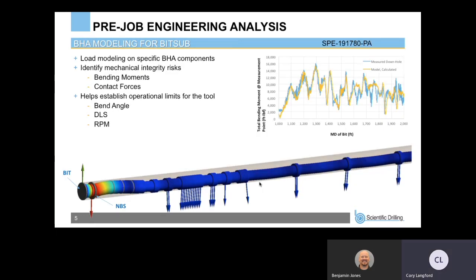One of the key pre-job modeling steps is actually looking at the bending moments and contact forces all along the BHA to ensure we're establishing the operational limits for the tool — the max bend angle of the motor, the max dogleg severity we would want to put the tool through, and the max RPM. This is a very key input to ensure a successful run. There are other at-bit measurements out there that don't have this pre-job modeling support, and whenever we've talked with people who have had bad experiences with at-bit subs, it's because the proper pre-job engineering analysis was not done.